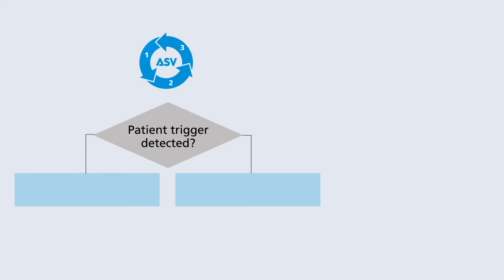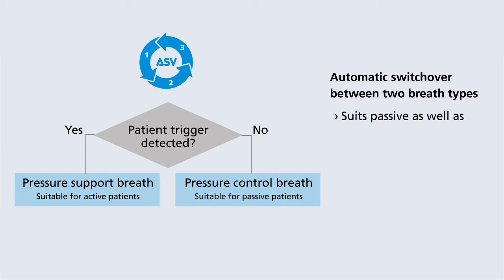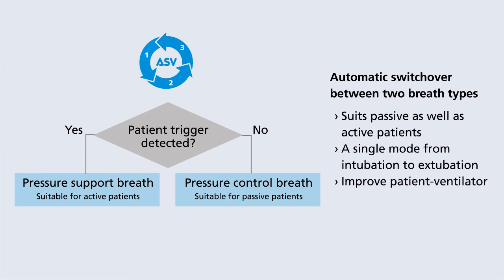ASV switches automatically between two types of mechanical breaths. If patient trigger effort is detected, the ventilator delivers a pressure support breath. If not, it delivers a pressure control breath. With this mechanism, ASV suits all ventilated patients, active and passive, from intubation through extubation. The mechanism can considerably improve patient-ventilator synchronization.